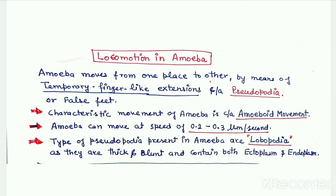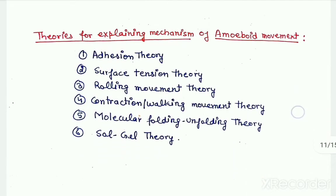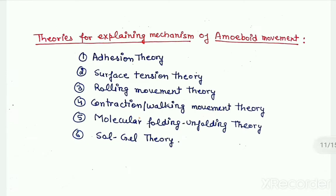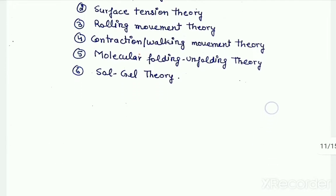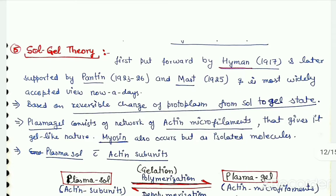Coming to the mechanism of amoeboid movement, numerous theories have been given for explaining its mechanism, but out of all these, the sol-gel theory is most valid or most widely accepted. This sol-gel theory was first put forward by Hyman, and we will study it in detail.